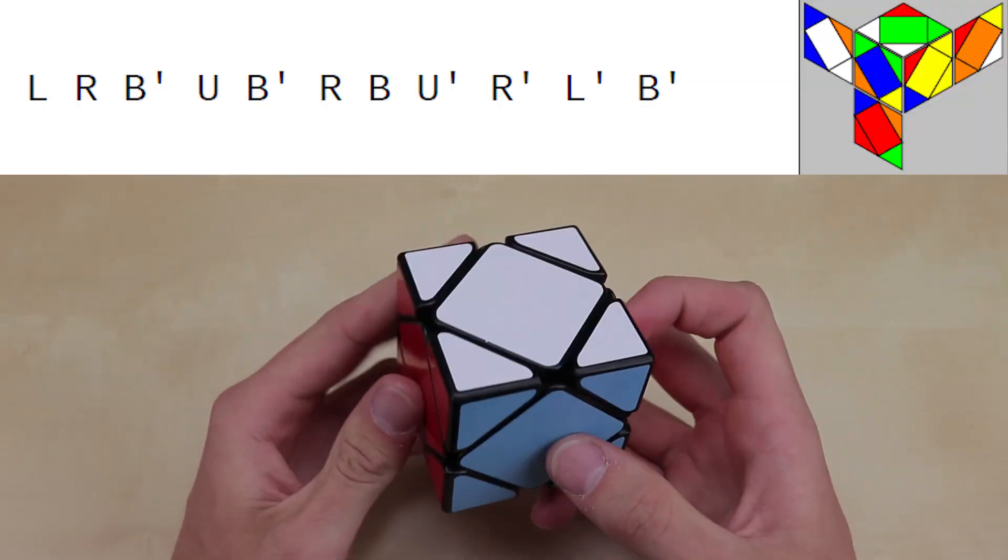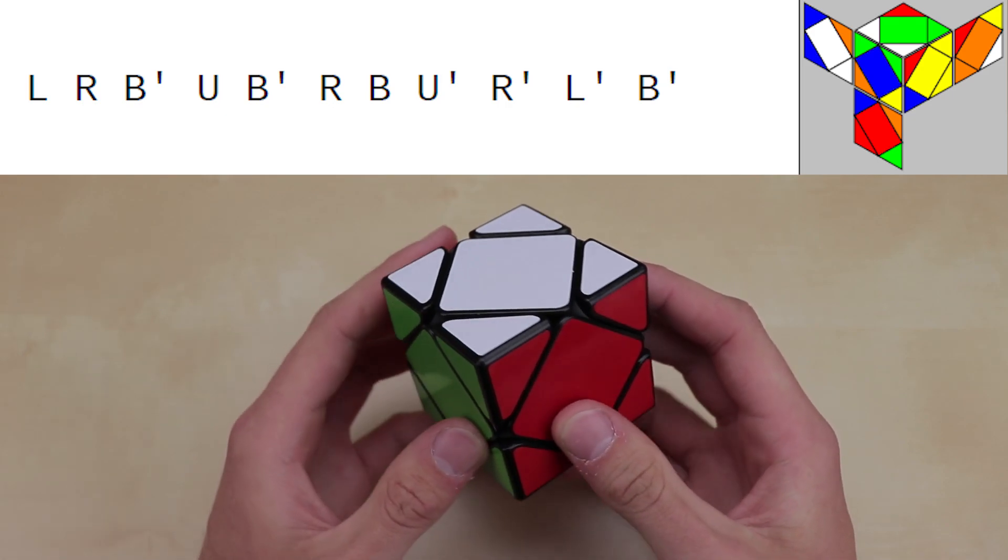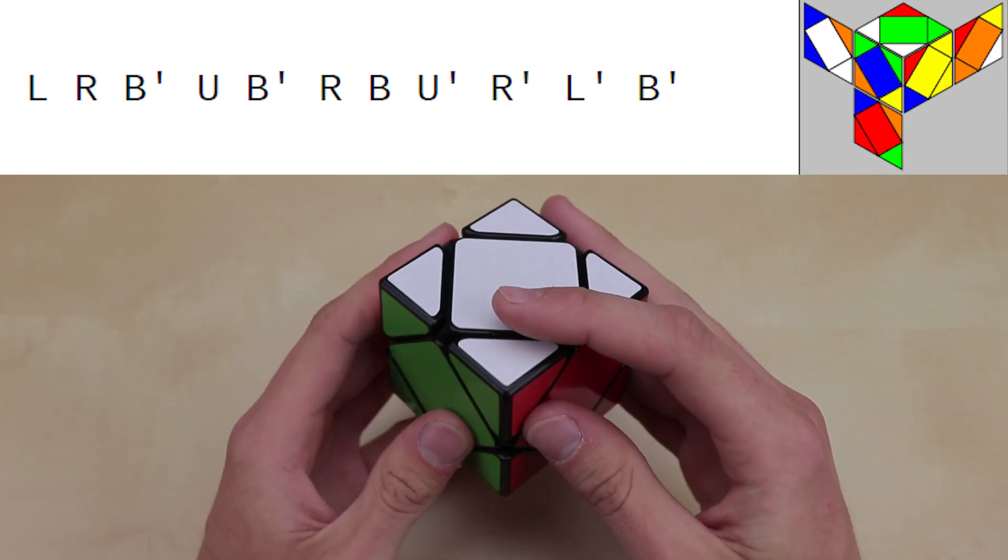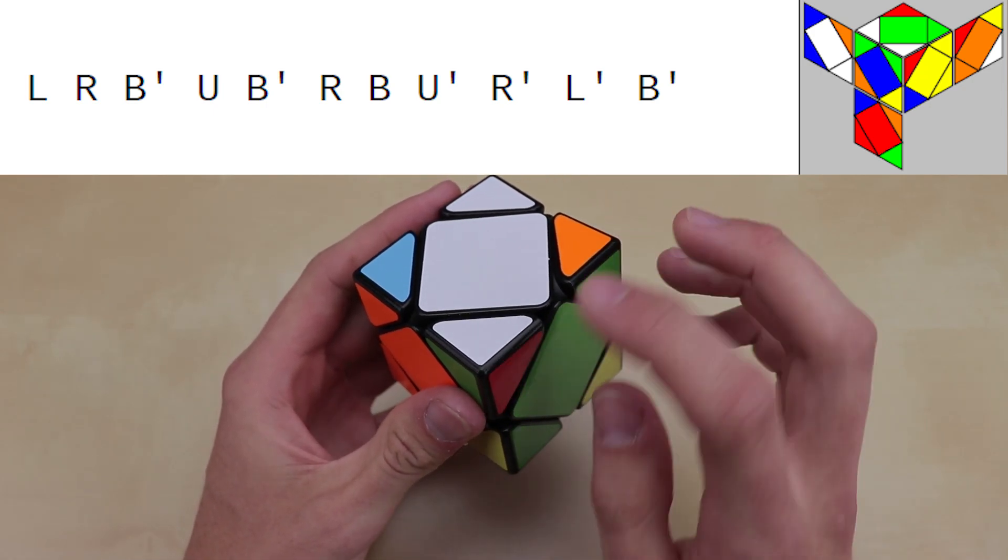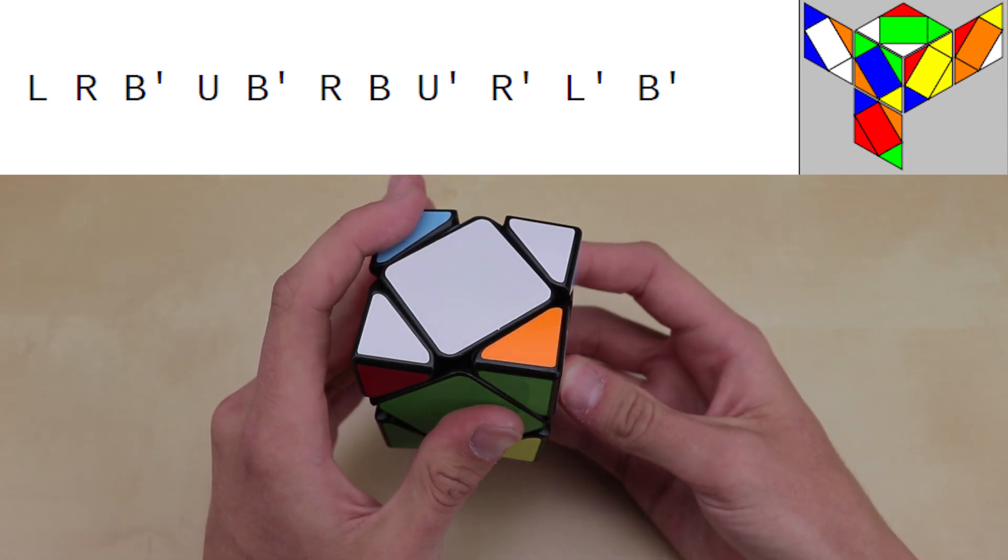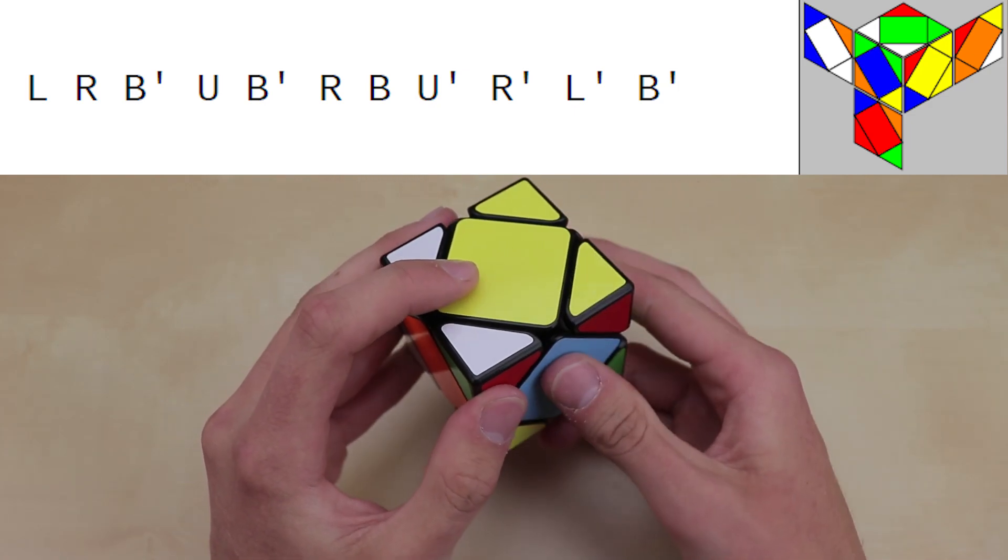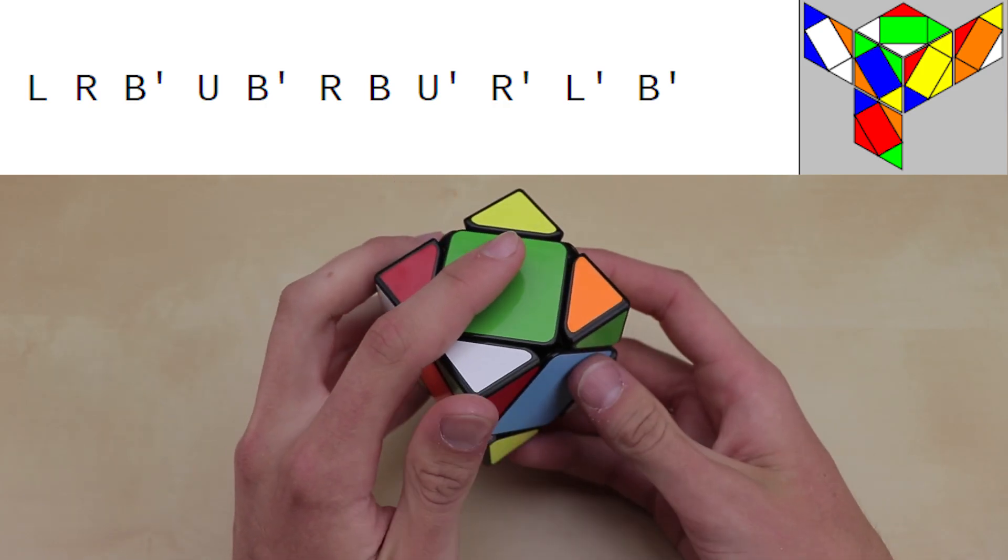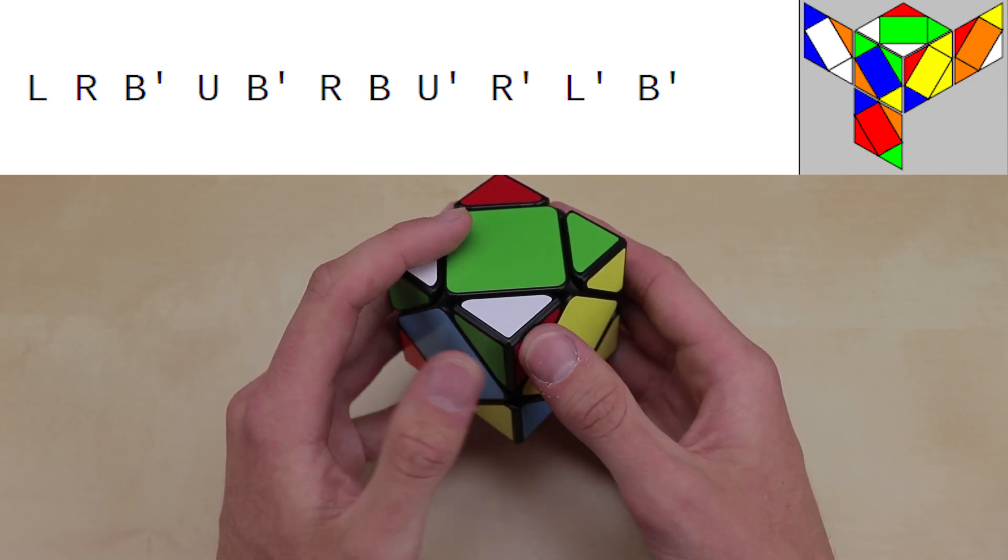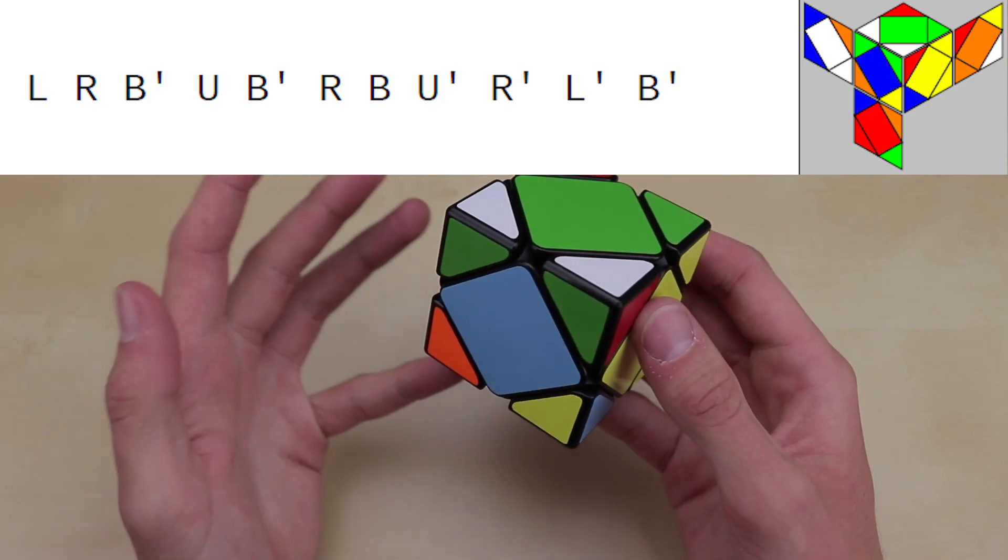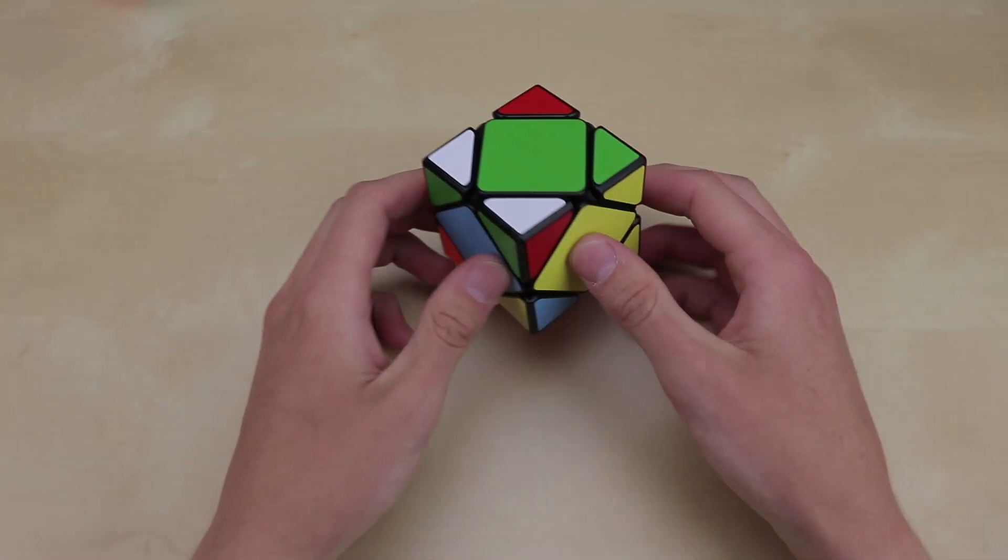So let's go ahead and pull up an official scramble, and we can go ahead and try it out. So we have white on top, and green in the left front. And so we keep this corner fixed, and we do an L move. So left, clockwise like this, then R, just like this, keeping the corner fixed, we have B prime, which is counterclockwise, U, B prime, R, B, U prime, R prime, L prime, and B prime. And notice how this corner in the very front is still the same corner that was there when we started, it never moved at all. And we can go ahead and check the scramble, and it looks correct.